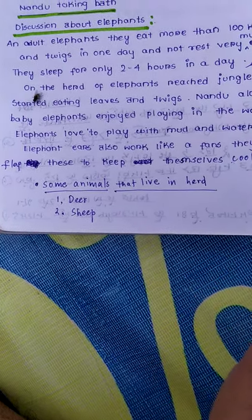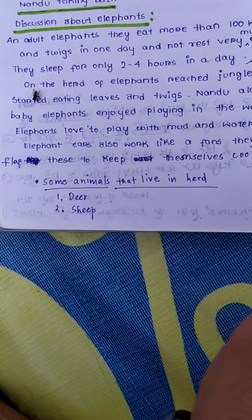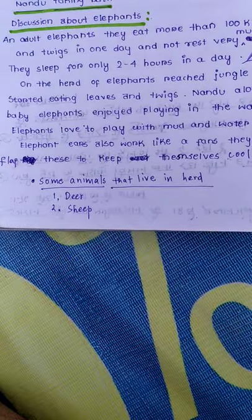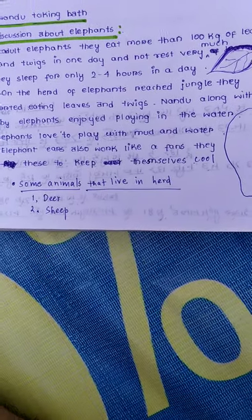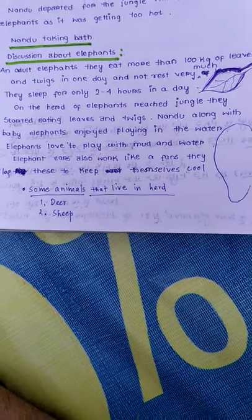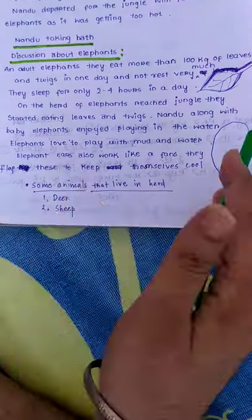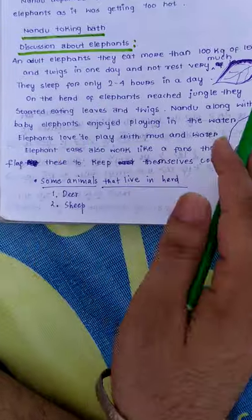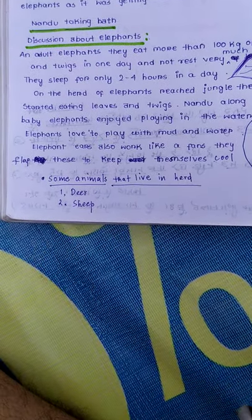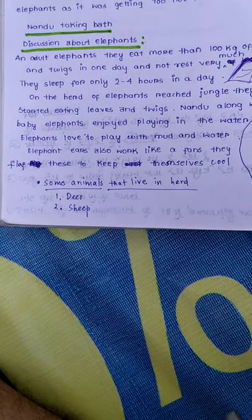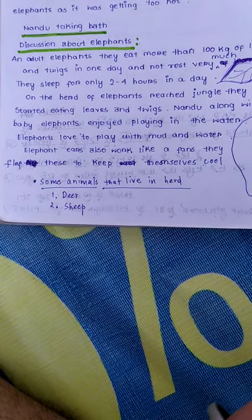The group of elephants is known as the herd. Any group of a type of animal — some animals live in herds, like deer. A herd of elephants reached the jungle and they started eating leaves and twigs.